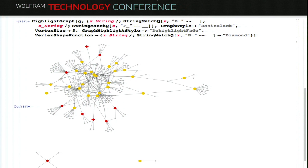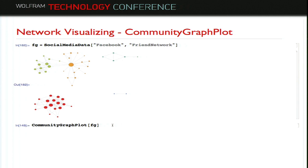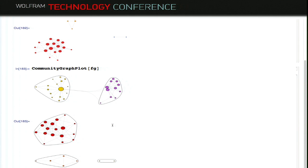Here comes the Facebook friend network. Vertex size corresponds to vertex degree and color is by group. If you really want to see communities, you can plug this graph into community graph plot — it will group your network by community. By default it runs find graph communities, but you can specify any community detection method as the second argument. Here's one group, here's another group, and so on.